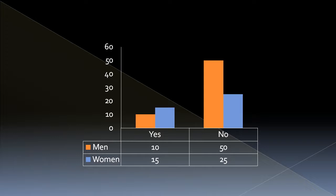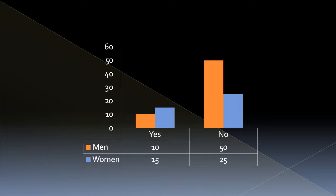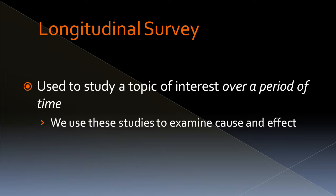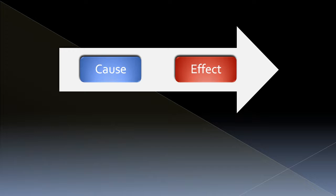That's a cross-sectional study. A longitudinal study is used to study a topic of interest over a period of time, and we use these studies to examine cause and effect, or at least possible cause and effect. Of course, if we're looking at time, cause must precede effect.